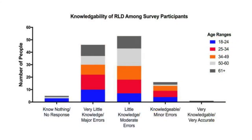This slide shows how knowledgeable people are about this disease. After asking whether they were familiar with it, I asked a series of questions about what they thought the disease was and how it's transmitted. What I found was that a majority of people had little to no knowledge of the disease, with moderate errors in their responses. Only about 11% of people had minor errors or were very accurate. Looking at the graph, it seems that the 61-plus age group is more represented in the very accurate category, while for the rest of the knowledge levels, the age ranges were generally even.